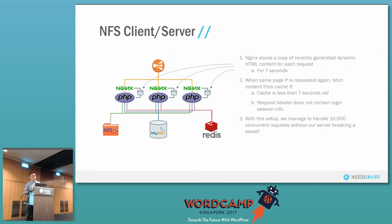So what we did was implement FastCGI caching within NGINX. Everything is NGINX — we love NGINX, it's everything we need to serve high load. With FastCGI caching, when a request comes in we fetch from the database and store a copy on disk. The next time the same request comes in for the same page, we just serve from that cache. With this, we are able to handle 10,000 concurrent requests with our CPU running at just 6%. So caching is really the way to go.